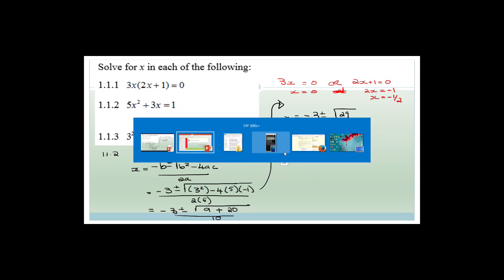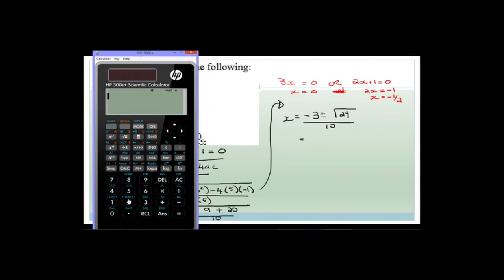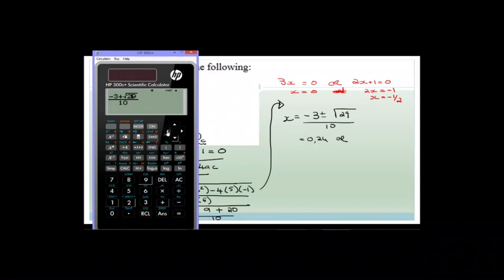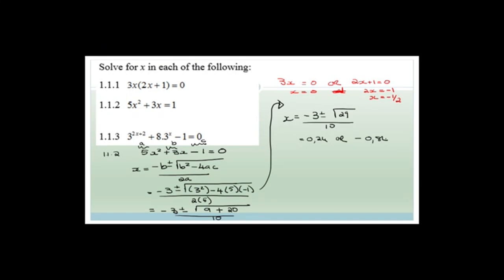We pop that into our calculator. Taking the plus first: negative 3 plus the square root of 29, all over 10 equals 0.24. Or changing to minus: that becomes negative 0.84. Those are your two answers. Always check the information sheet to see if they tell you to round to one decimal place or two decimal places, and then do whatever they say.